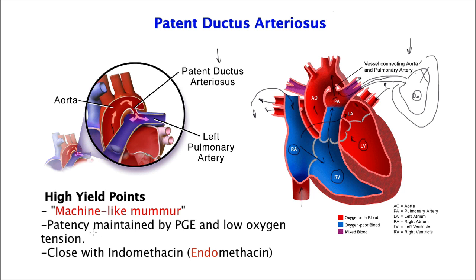The patency of a patent ductus arteriosus is often maintained by prostaglandin E and also low oxygen tension — that keeps the PDA open. However, in order to fix this pathology, you give the patient indomethacin, which closes the patent ductus arteriosus. Once you close that channel, blood can easily translocate and go down from the aorta to the rest of the systemic circulation. For the board exam: prostaglandin E and low oxygen tension keeps it open, and indomethacin closes it.